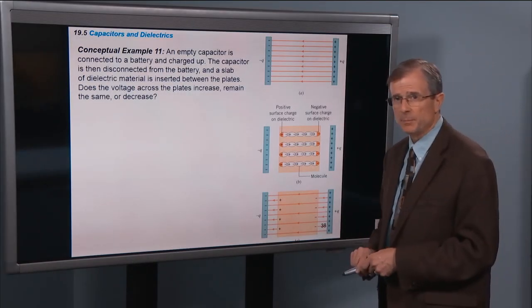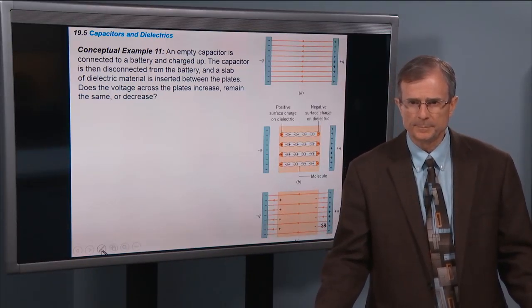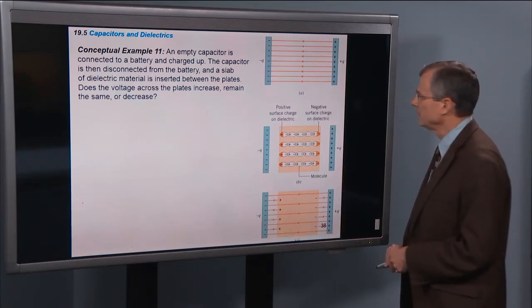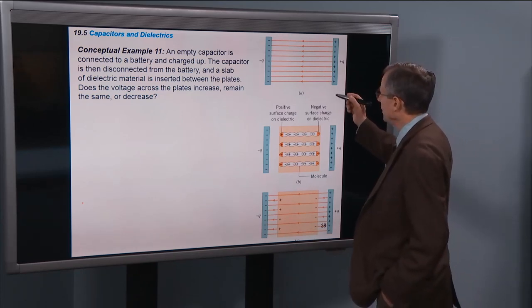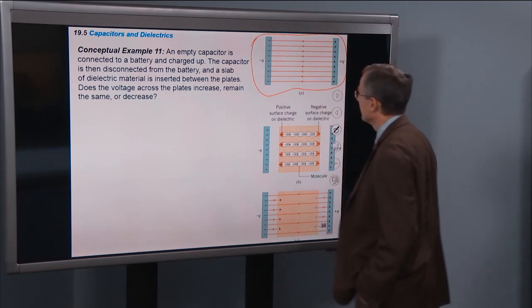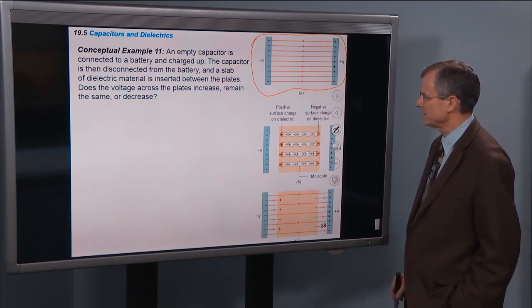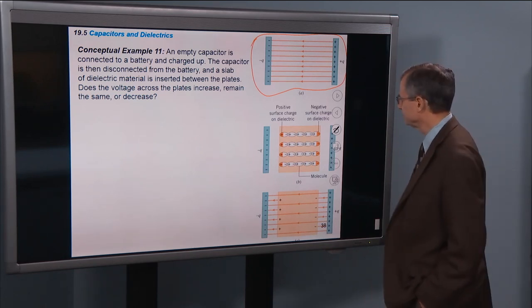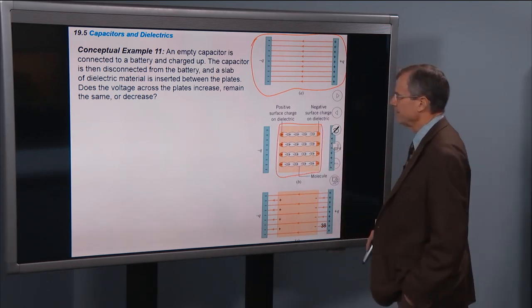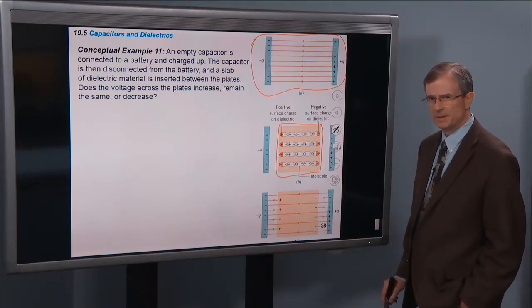Okay, a conceptual example. An empty capacitor is connected to a battery and charged up. So here we go. Here's the capacitor that's been charged up. It's got a charge Q on it. The capacitor is then disconnected from the battery. And a slab of dielectric material is inserted between the plates. So here's my slab that we've inserted. Does the voltage across the plates increase, remain the same, or decrease?